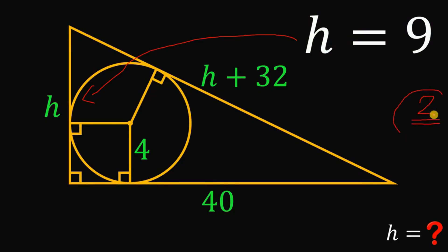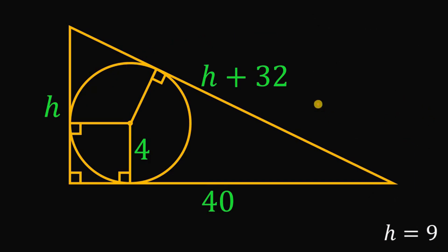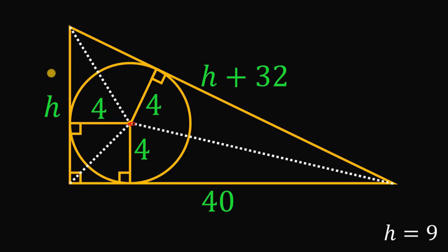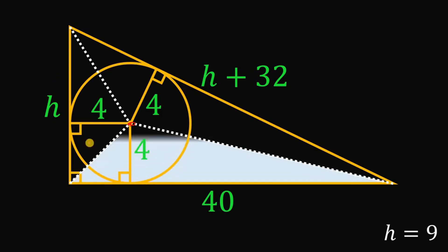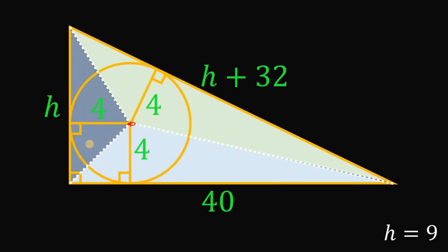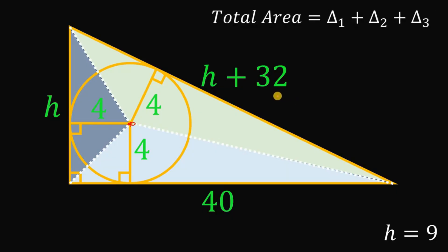Now let's begin our second solution using the area of the figure. Take note that all of these segments are radii of the circle, meaning all of these measures are 4 units. From the center of the circle, we connect all the vertices of the triangle, creating three smaller triangles — the first triangle, the second triangle, and the third (bottom) triangle.